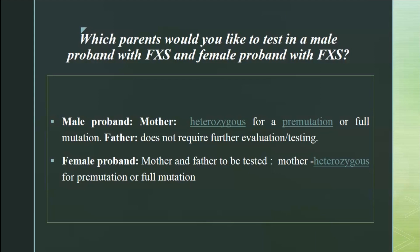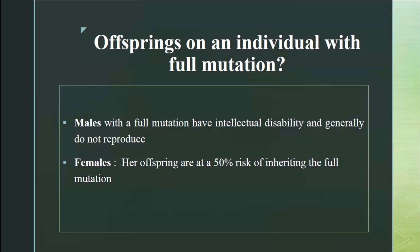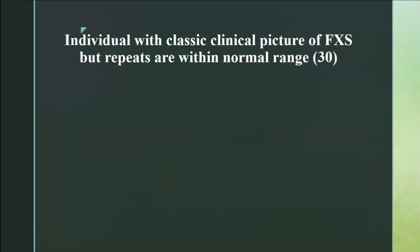For a female proband to have Fragile X from the father, the father would need to have a pre-mutation, but expansion from pre-mutation to full mutation when transmitted by a male is very unlikely. Males carrying full mutation generally don't reproduce due to significant intellectual disability, so offspring being affected this way is very rare. If a classic Fragile X picture presents but TP-PCR shows only 30 repeats — normal — you should look at the FMR1 gene itself.